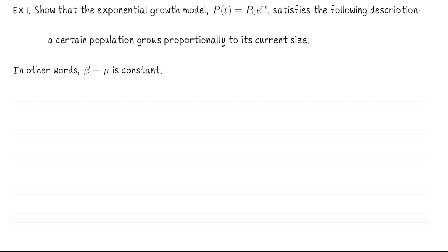Let's look at an example: the classic exponential growth model. We've seen this equation before — p of t equals p-naught times e to the r·t. Let's show that this growth model satisfies the following description: a population grows proportionally to its current size. We'll translate that into words and then show this model satisfies our mathematical description. We'll recognize that this is the same as saying beta minus mu is a constant.